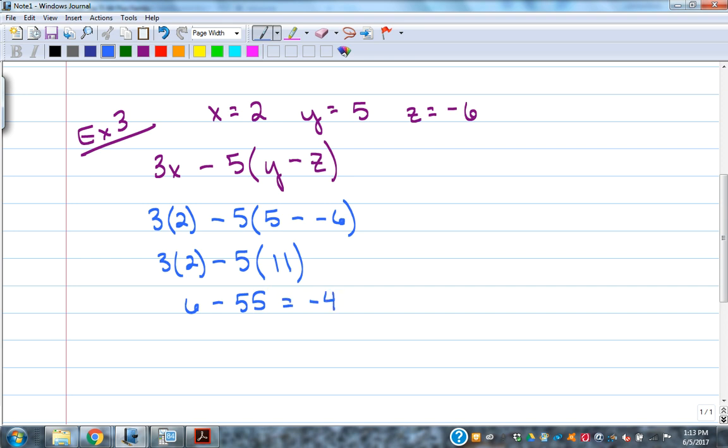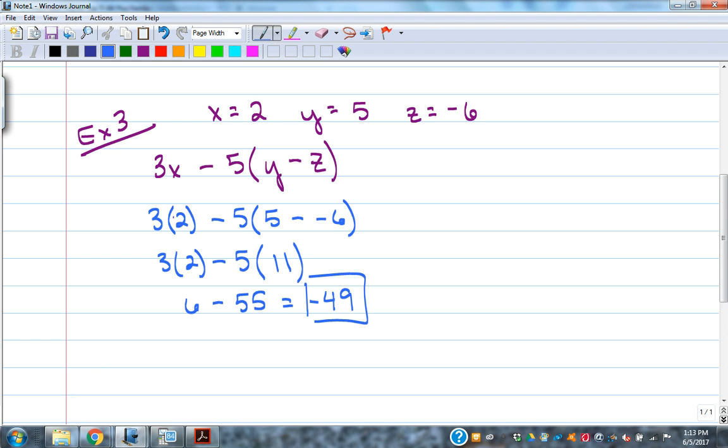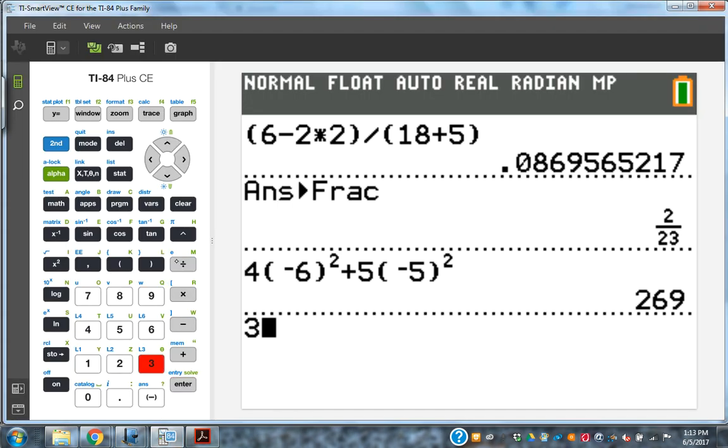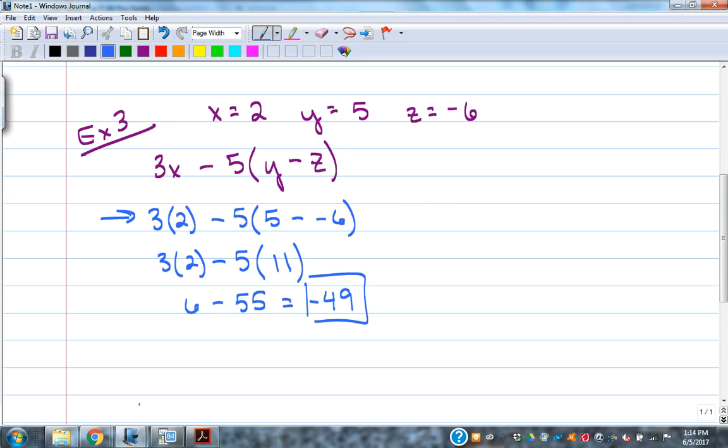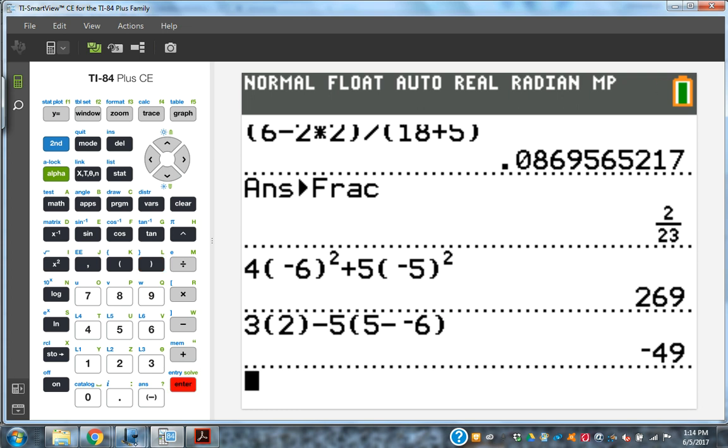Again, you could do that in your calculator by plugging it in just as it's written here in the blue line there: 3 parentheses 2, minus 5 parentheses 5 minus negative 6. Then hit Enter, and there we have negative 49, correct answer there.